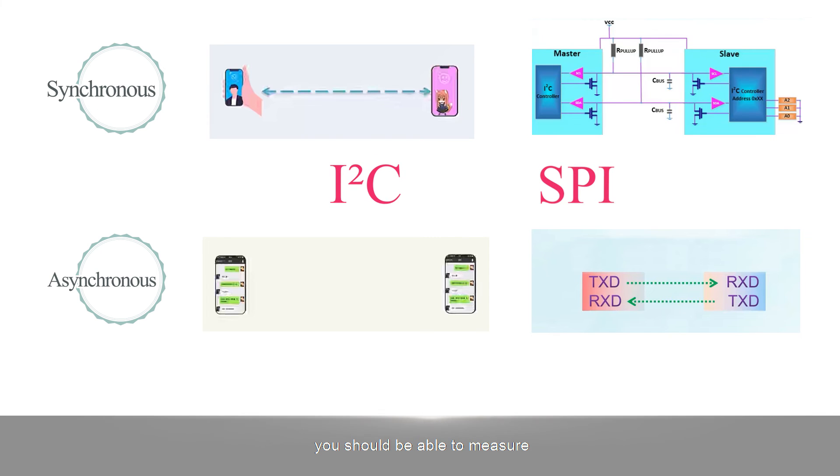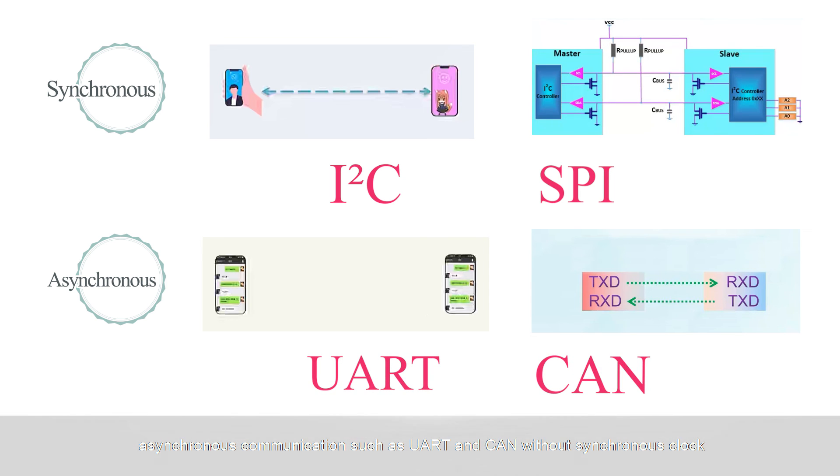By definition, synchronous communication such as I²C and SPI have synchronous clocks, while asynchronous communication such as UART and CAN do not have synchronous clocks.